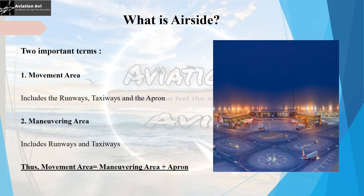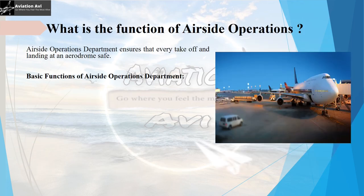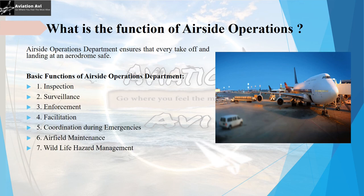Now, what is the function of air side operations? Air side operations is the department that ensures every takeoff and landing at an aerodrome is safe. The seven basic functions of the air side department are: inspection, surveillance, enforcement, facilitation, coordination during emergencies, airfield maintenance, and wildlife hazard management.